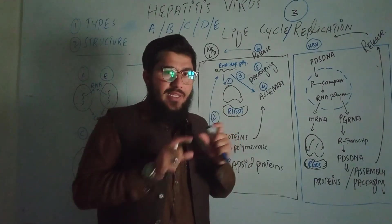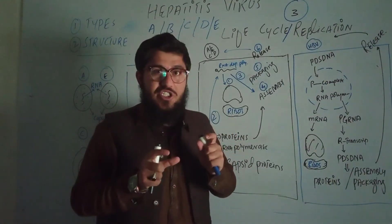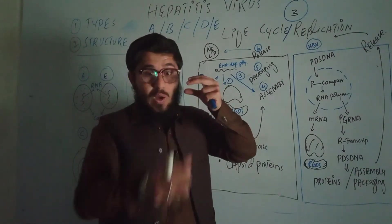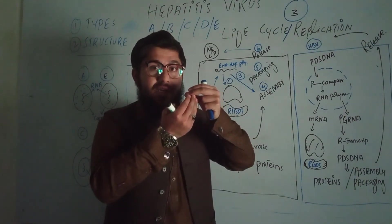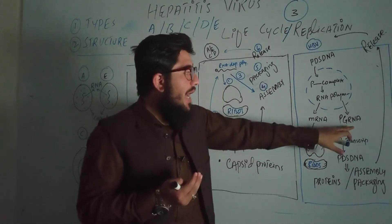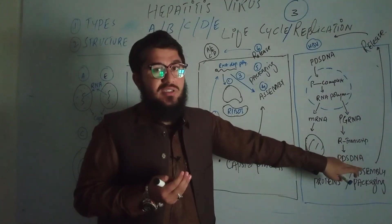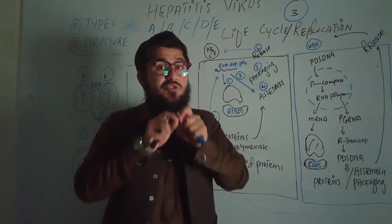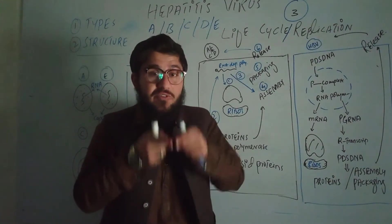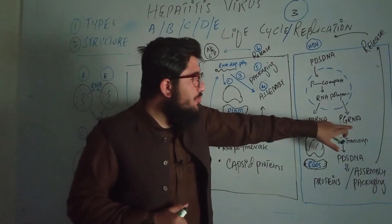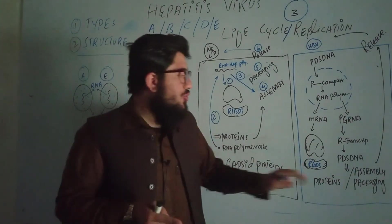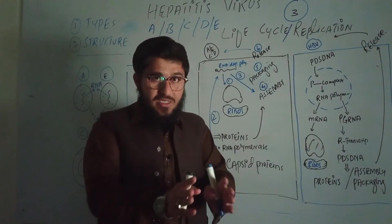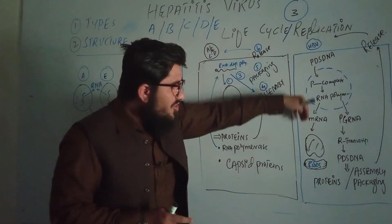The pre-genomic RNA goes forward, and reverse transcriptase binds to it. DNA to RNA is transcription; RNA to DNA is reverse transcription — and that is exactly what happens here. The reverse transcriptase converts the pre-genomic RNA back into partially double-stranded DNA of HBV. For transcription we need transcriptase; for reverse transcription we need reverse transcriptase.